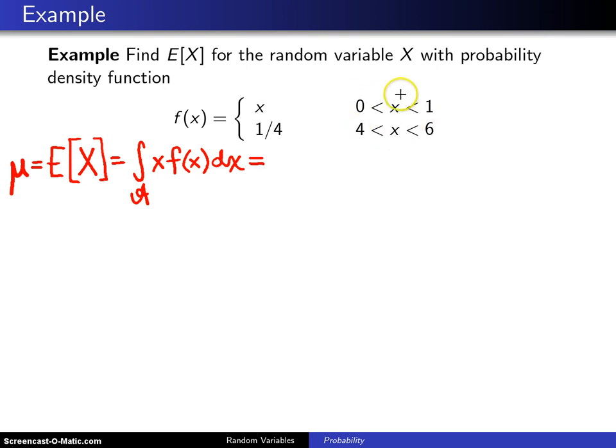Since this is defined in a piecewise fashion, the probability density function, this will be two separate integrals added together. The first one will go from 0 to 1, and it will be x multiplied by the probability density function on that segment, dx. The second segment runs from 4 up to 6, and in this case you will have x multiplied by the probability density function 1/4, dx.